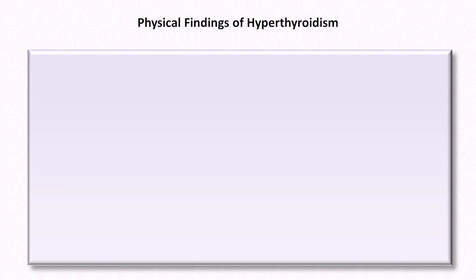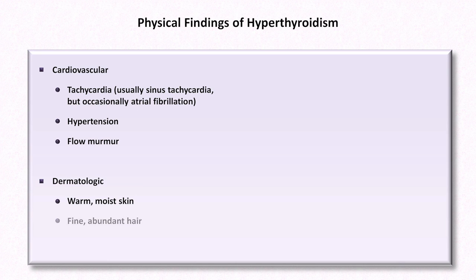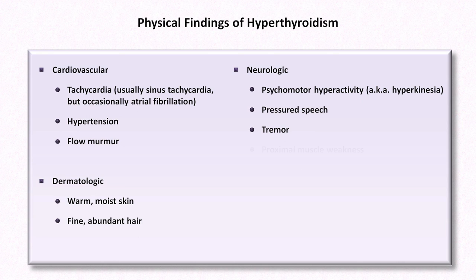Moving on to hyperthyroidism, it too has a large number of diverse findings. In the cardiovascular system, there is almost always tachycardia — usually sinus tachycardia, but occasionally atrial fibrillation. Patients are frequently hypertensive and may have a flow murmur on account of increased myocardial contractility. The skin is frequently warm and moist, and hair is fine and abundant. The neurologic exam is frequently abnormal: patients can exhibit psychomotor hyperactivity, also known as hyperkinesia; pressured speech; a fine tremor; proximal muscle weakness; and generalized hyperreflexia.